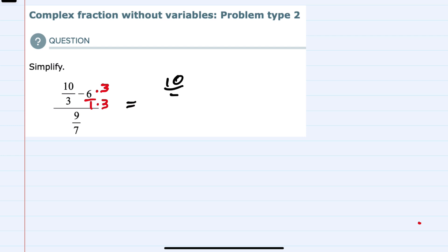So what that gives us is our 10 thirds, now minus, on the right hand side, I have the common denominator of 1 times 3, which is 3, and the numerator is the 6 times 3, or 18.